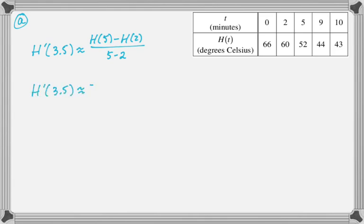And you get approximately negative 8 thirds. So you get exactly negative 8 thirds when you do the subtraction, but that's an approximation of H'. So H'(3.5) approximately negative 8 thirds. And then what are the units of this?